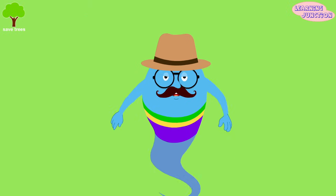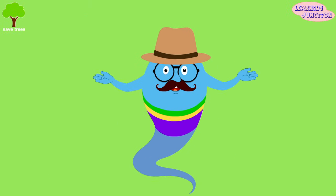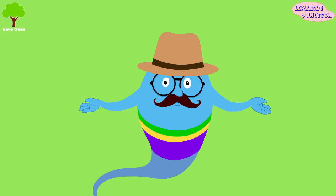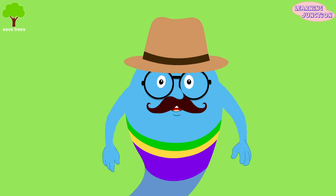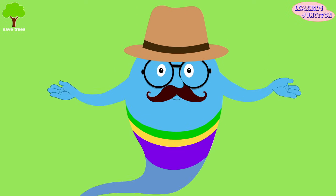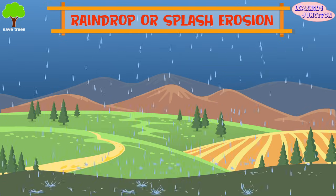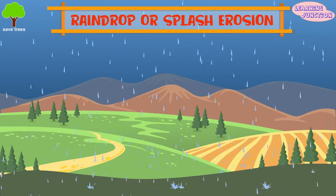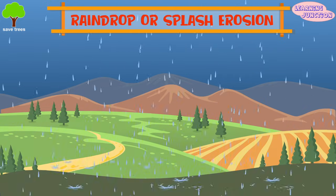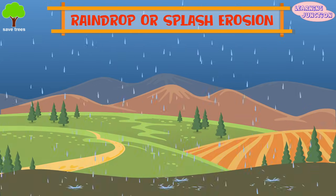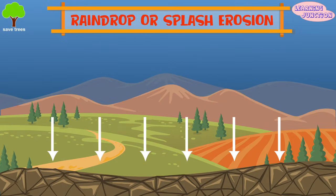There are five main types of soil erosion. Let's learn about them one by one. Raindrop or splash erosion: the erosion caused because of falling raindrops on soil surface which crumbles the soil structure is known as raindrop or splash erosion.